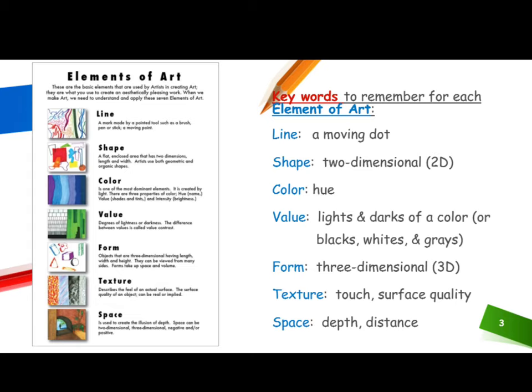Key words to remember for each element of art: Line — a moving dot. Shape — two-dimensional (2D). Color — hue, value, lights and darks of a color, or blacks, whites, and grays. Form — three-dimensional (3D). Texture — touch, surface quality. Space — depth, distance.